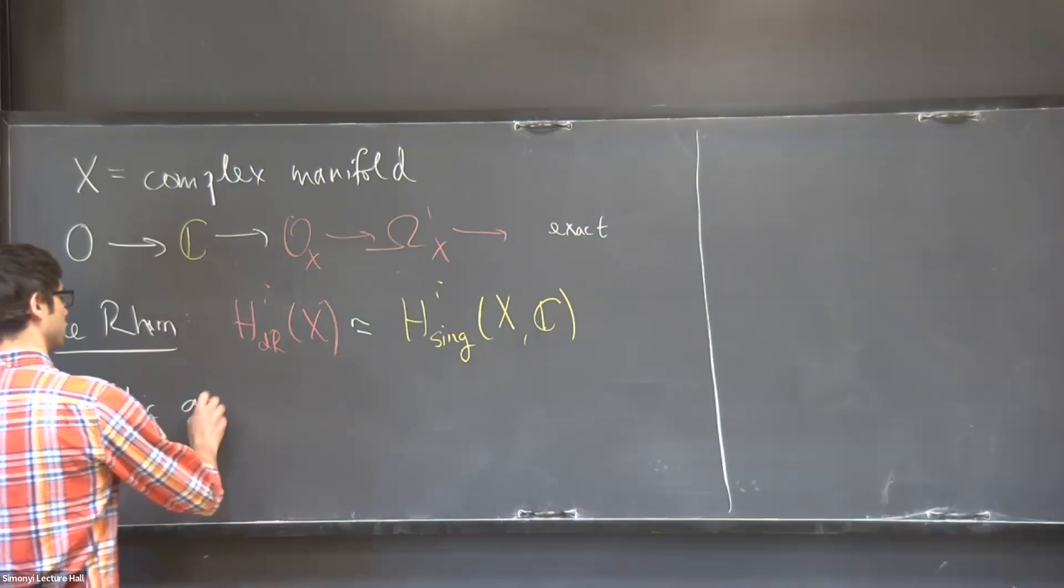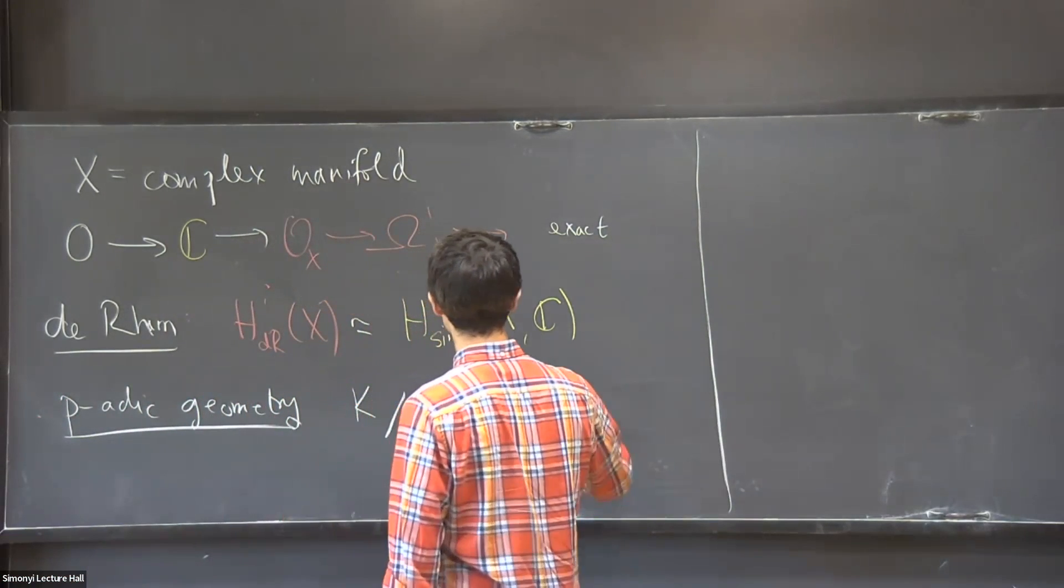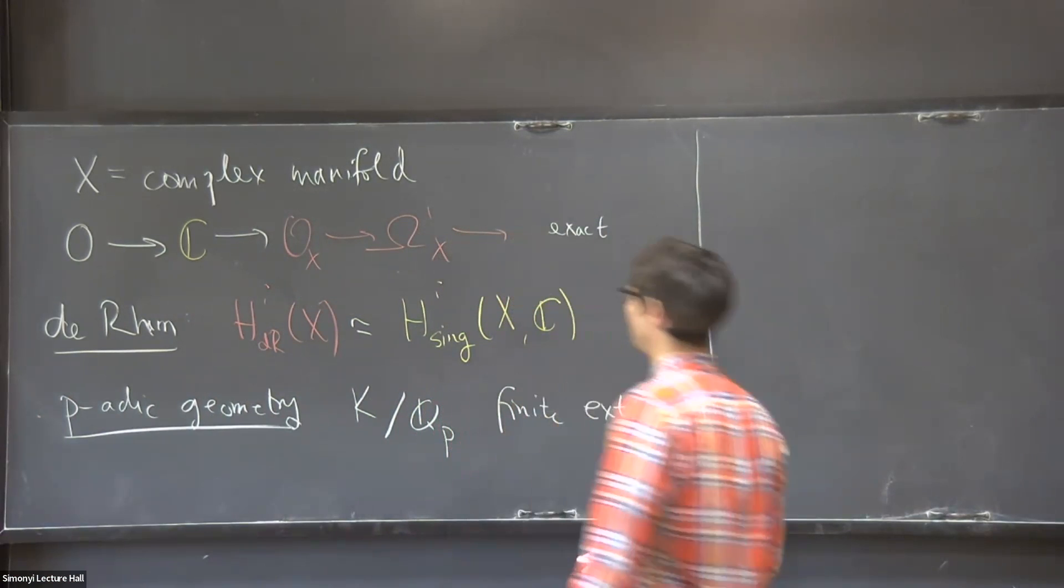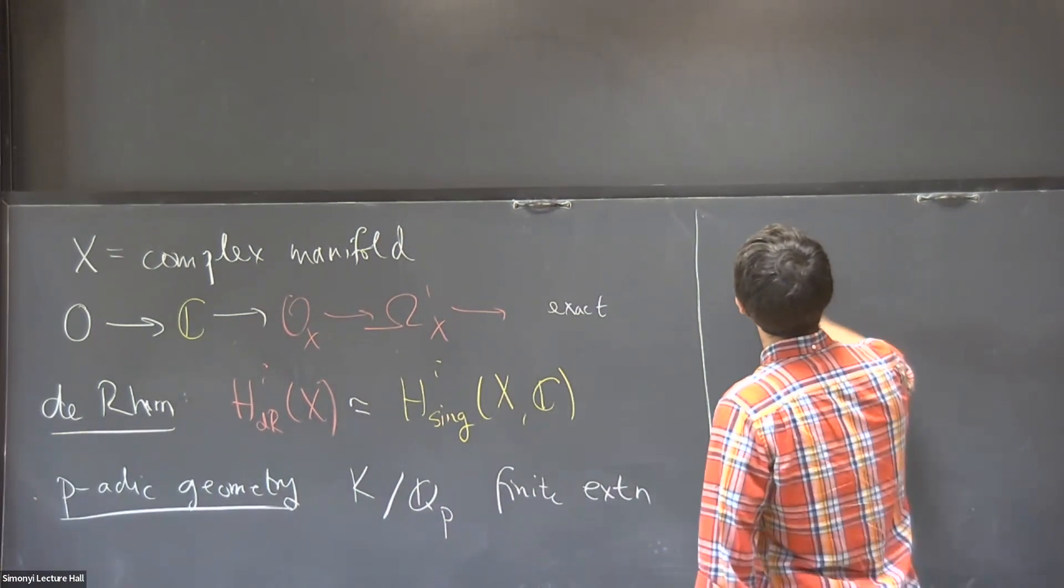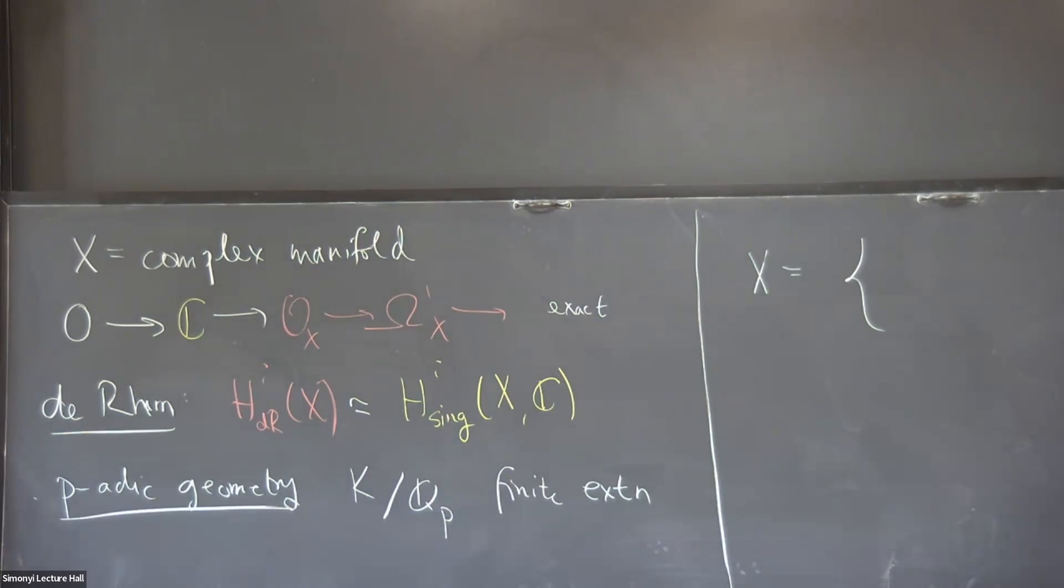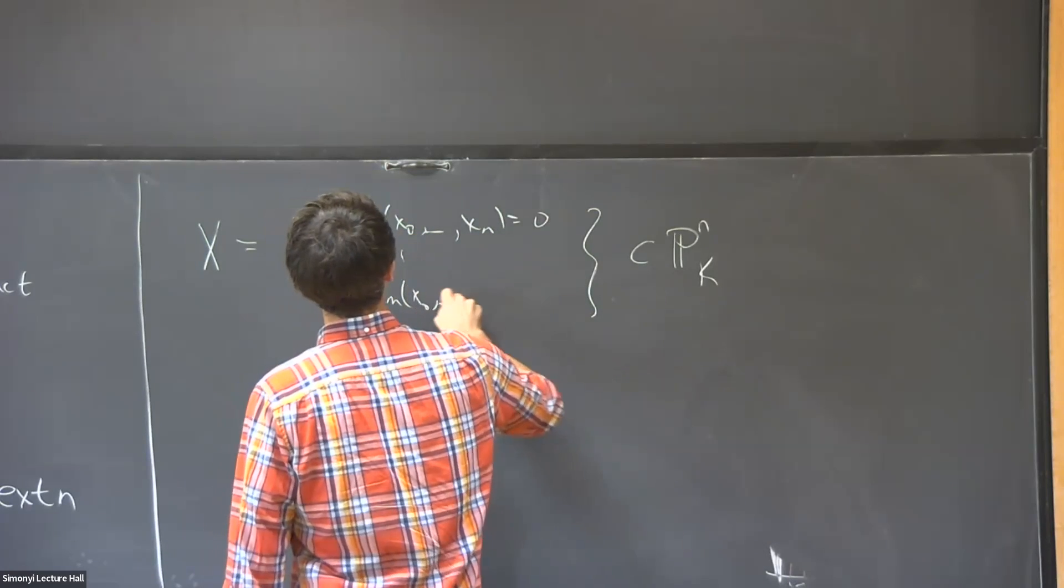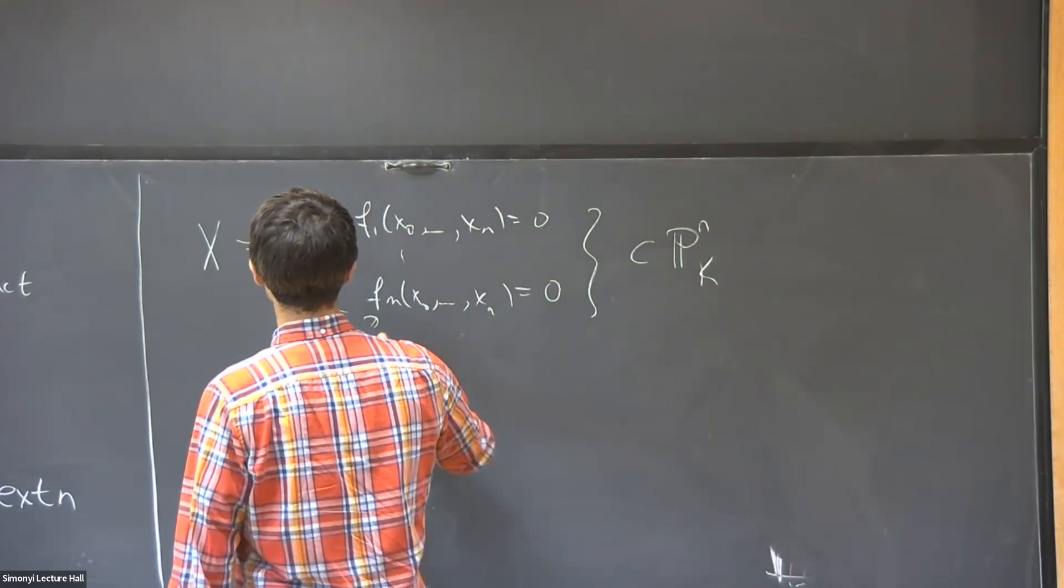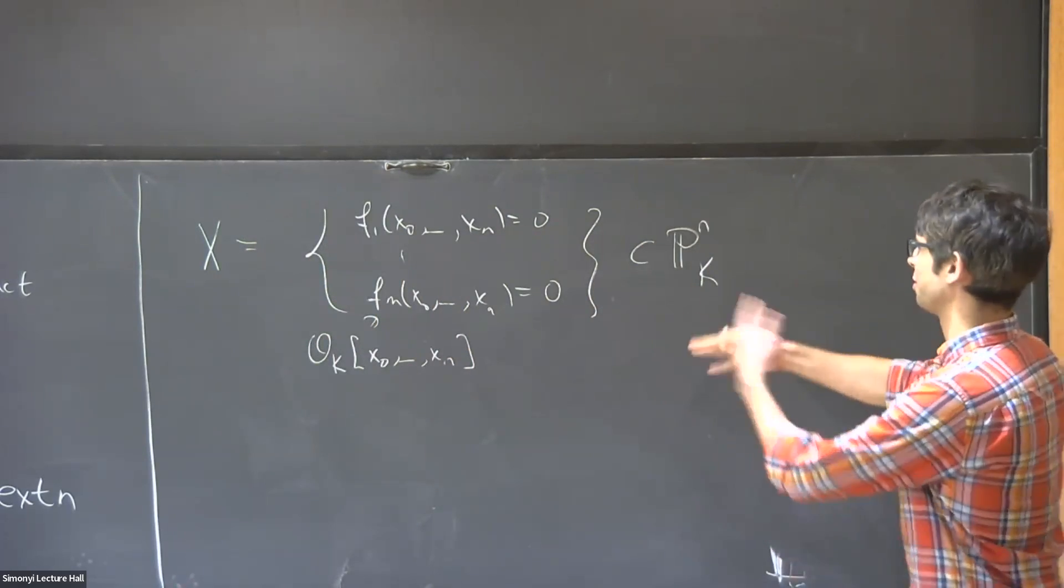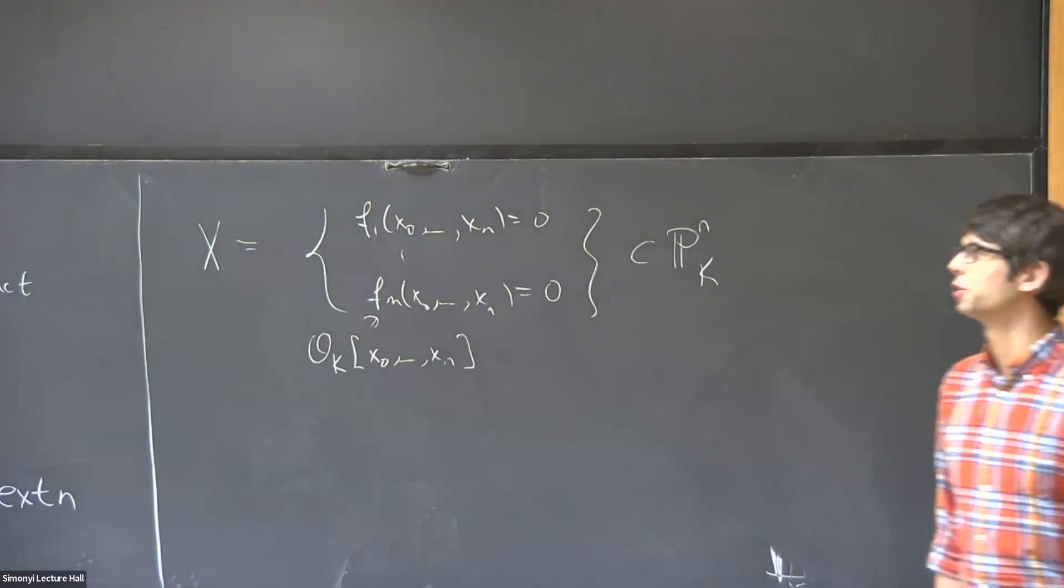And it turns out that in p-adic geometry, there's actually a bunch of such isomorphisms. I want to talk about a particular one where this X is given as some zero set of polynomials inside the projective space of k, and I actually want to insist that these polynomials are defined already over the ring of integers of k. And then also there's some smoothness here, so the experts can and are encouraged to think of this as a smooth proper variety with good reduction over k.